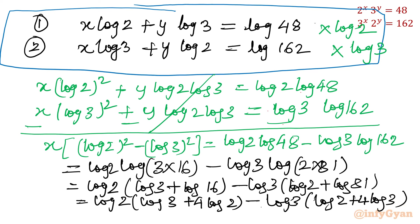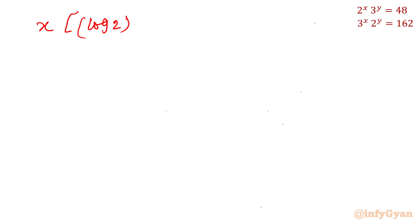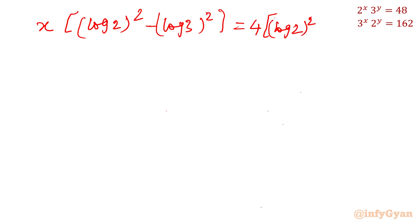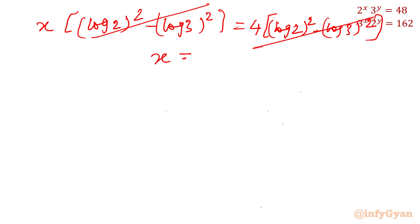Expanding and canceling: the log2·log3 term appears positively and negatively, so they cancel. What remains is 4·(log2)² minus 4·(log3)². So we have x·[(log2)² minus (log3)²] equal to 4·[(log2)² minus (log3)²]. Canceling the common bracket from both sides gives x equal to 4.